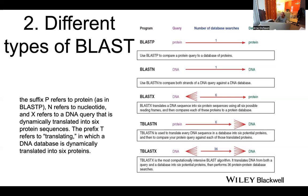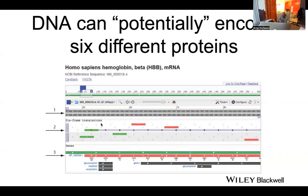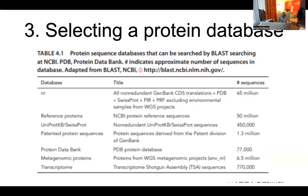Once you've decided what to run, you have to decide what database to run against. With six-frame translations you can generate six possible protein sequences from a gene. You can search NR (non-redundant), which had 65 million sequences when this was written but now has a few hundred million. You can also search PDB, Swiss-Prot — a much more reduced database — or metagenomic databases, which are many orders of magnitude bigger.